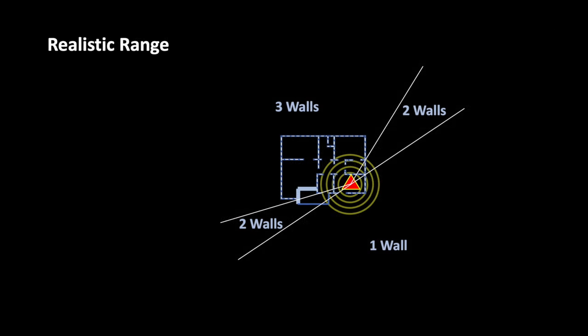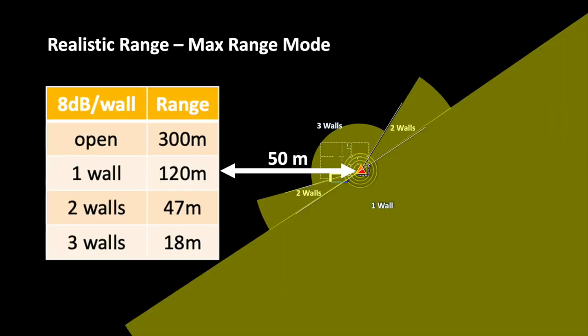The range of 300 m outdoors can actually be calculated and confirmed using the receiver sensitivity and the maximum transmission power. There would be then even a 10 dB safety margin. With a wall in the signal path that attenuates 8 dB we can still achieve about 120 m of range. With two walls still 47 m and with three walls only 18 m.